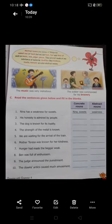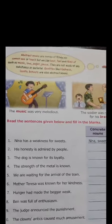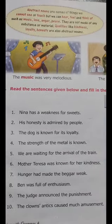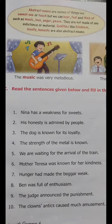Abstract Noun. Children, abstract nouns are the name of things we cannot see or touch, but we can hear, feel, and think of — such as music, love, anger, peace. They are not made of any substance or material. Qualities like kindness, loyalty, and honesty are also abstract nouns.